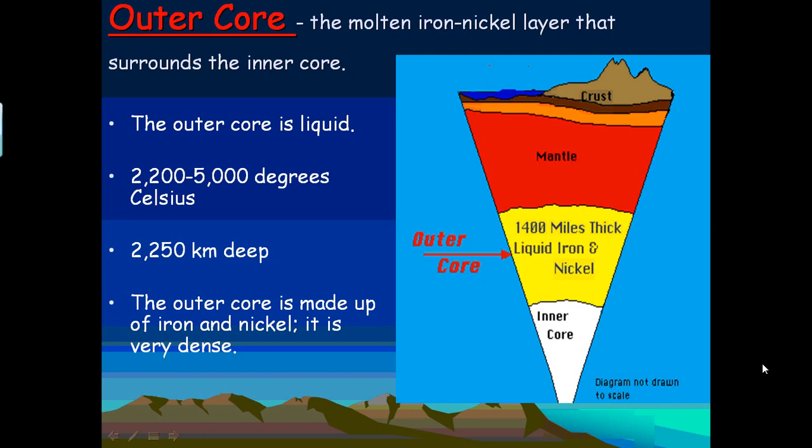Its temperature ranges from 2,200 to 5,000 degrees Celsius, so it's hotter than the mantle. Its depth is 2,250 kilometers. The outer core is made of iron and nickel and is very dense.